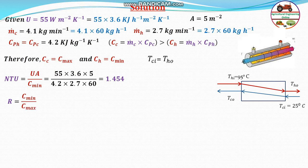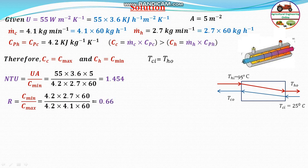For a counter-current heat exchanger, the heat capacity ratio R = C_min / C_max. C_min is 4.2 × 2.7 × 60 and C_max is 4.2 × 4.1 × 60. Putting these values together gives R = 0.66.